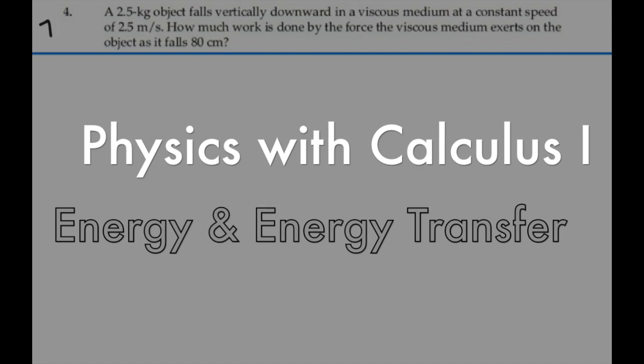Here's problem 7.4. A 2.5 kilogram object falls vertically downward in a viscous medium at a constant speed of 2.5 meters per second. How much work is done by the force the viscous medium exerts on the object as it falls 80 centimeters?